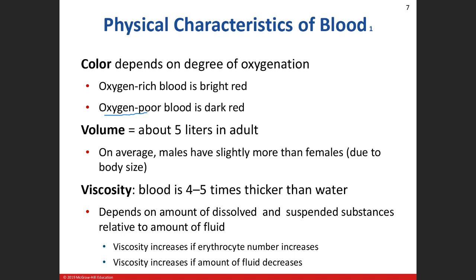Cherry red blood means you're having some sort of poisoning. Carbon monoxide poisoning. Carbon monoxide loves hemoglobin way more than oxygen — it can bind to hemoglobin way better than oxygen. If you have carbon monoxide poisoning, it sits on the hemoglobin and the oxygen can't get on. The treatment for carbon monoxide poisoning is 100% oxygen right away, because if you flood that person with oxygen, eventually it will displace the carbon monoxide.